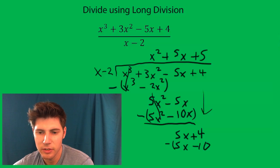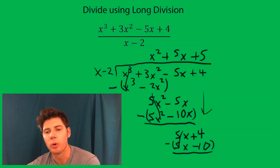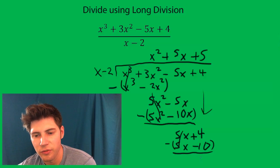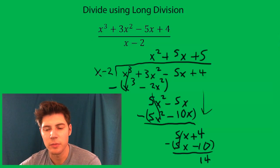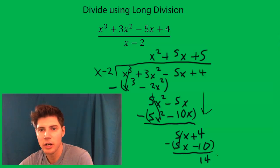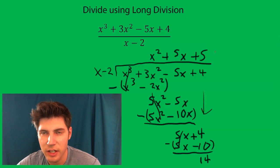Subtracting this, those go away and it's 4 minus negative 10, which is 14. Now this x minus 2 isn't going to go into 14 at all. So what we can do is that's kind of our remainder.